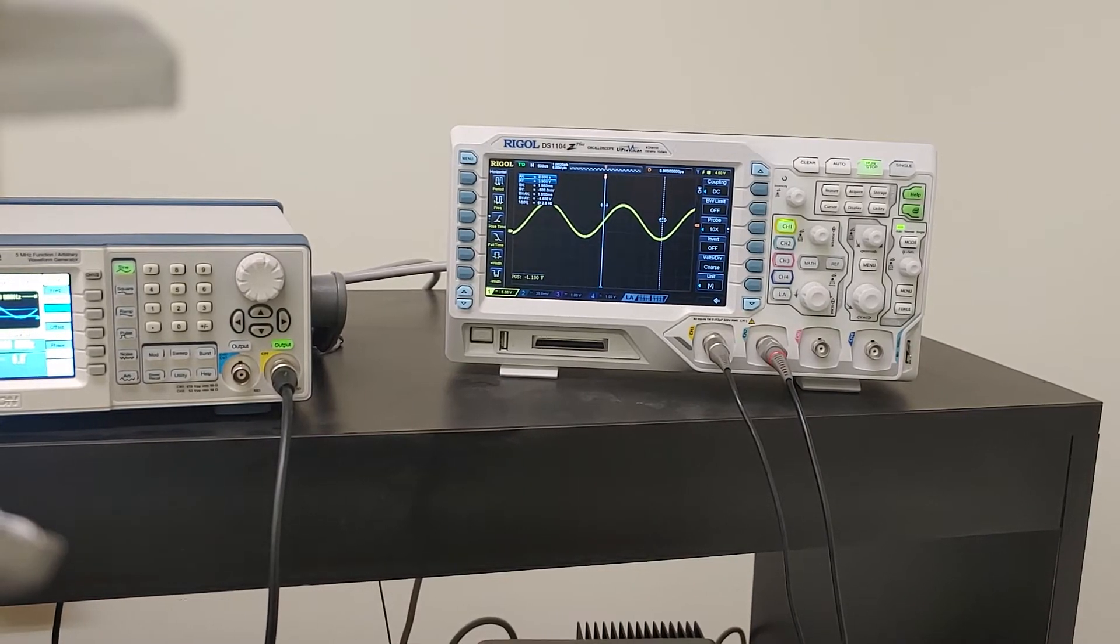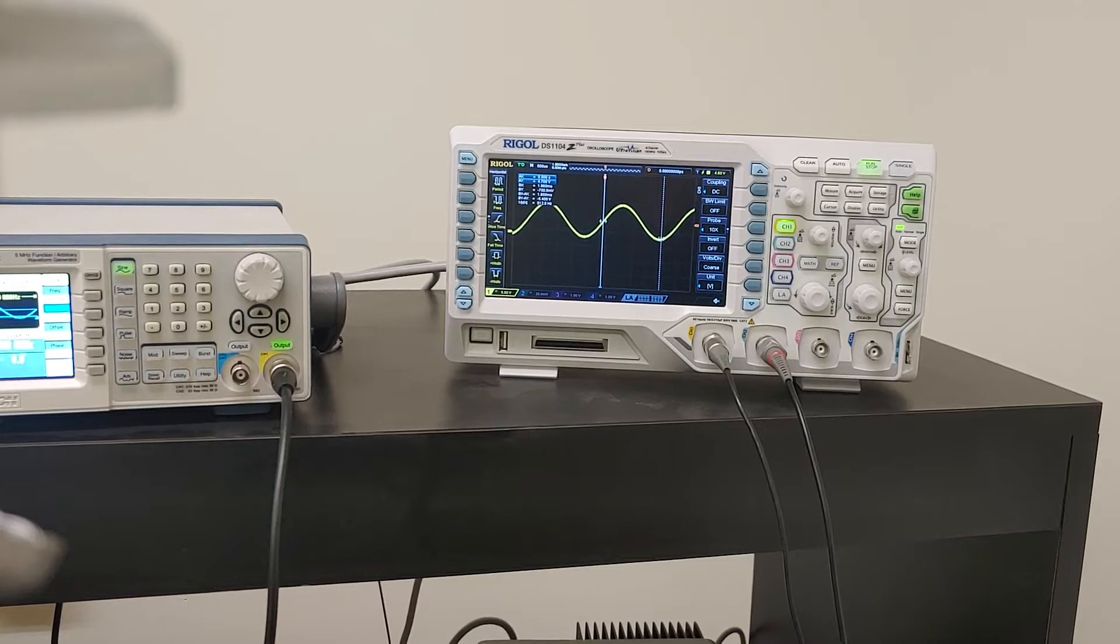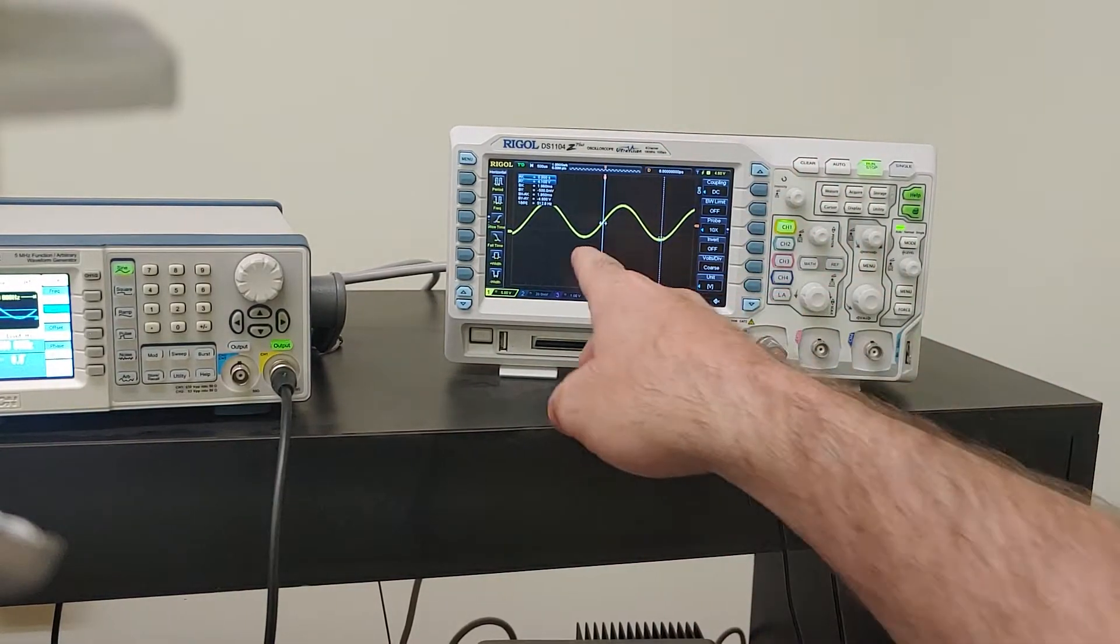One of the most beautiful things about a scope is that it can measure things for us. The digital ones do. The old green ones, you had to count ticks.